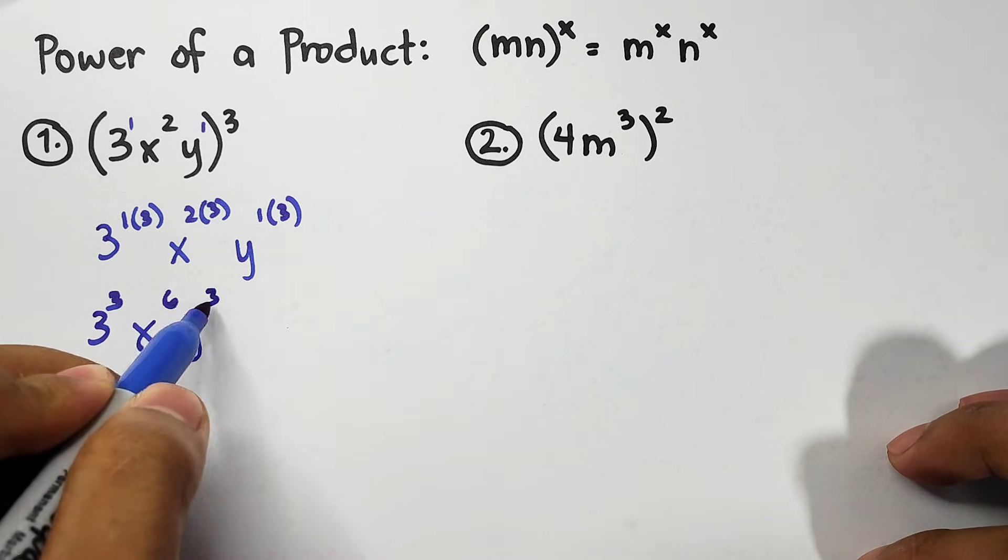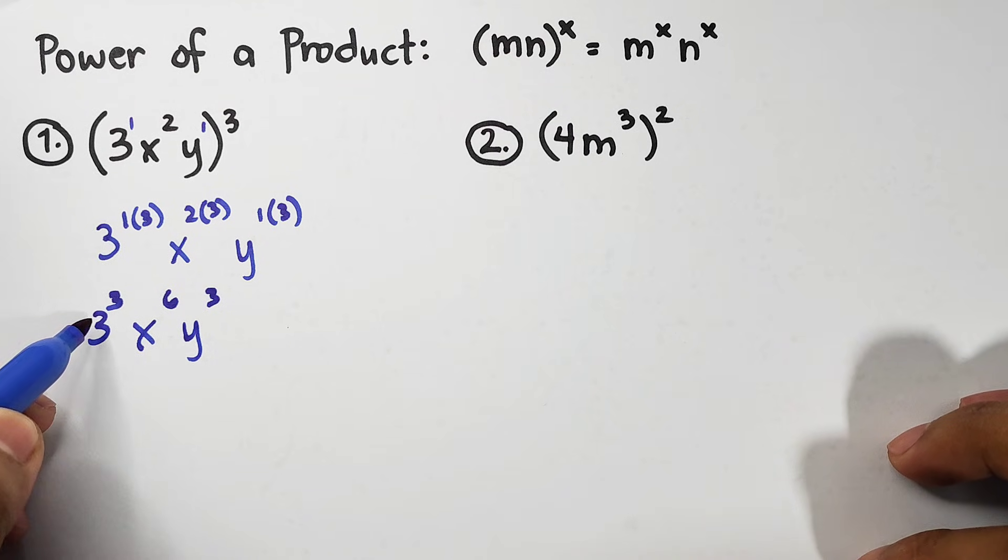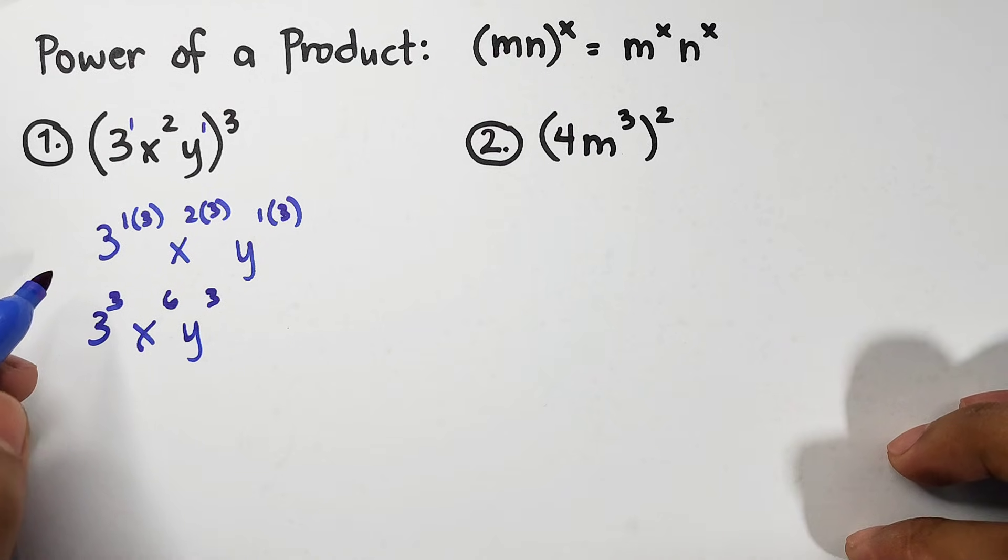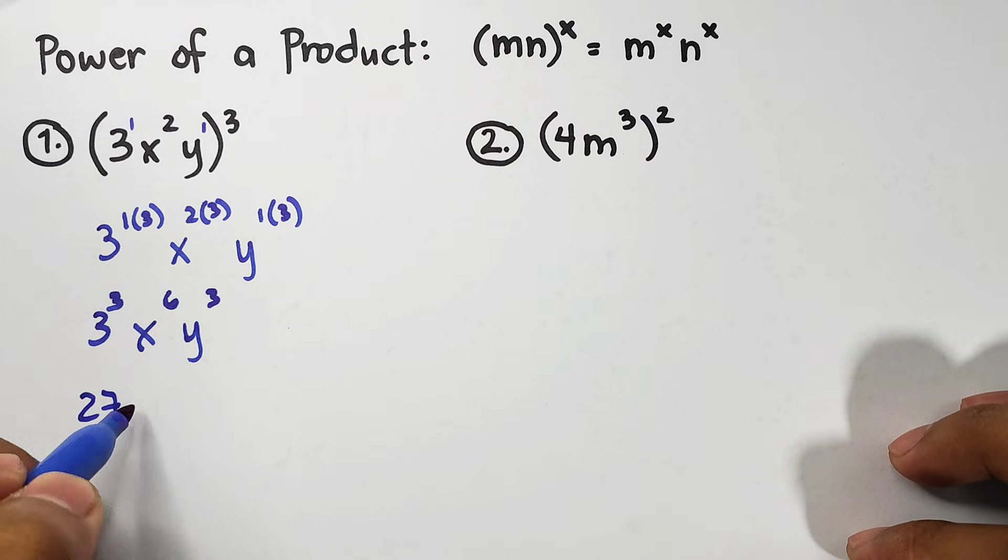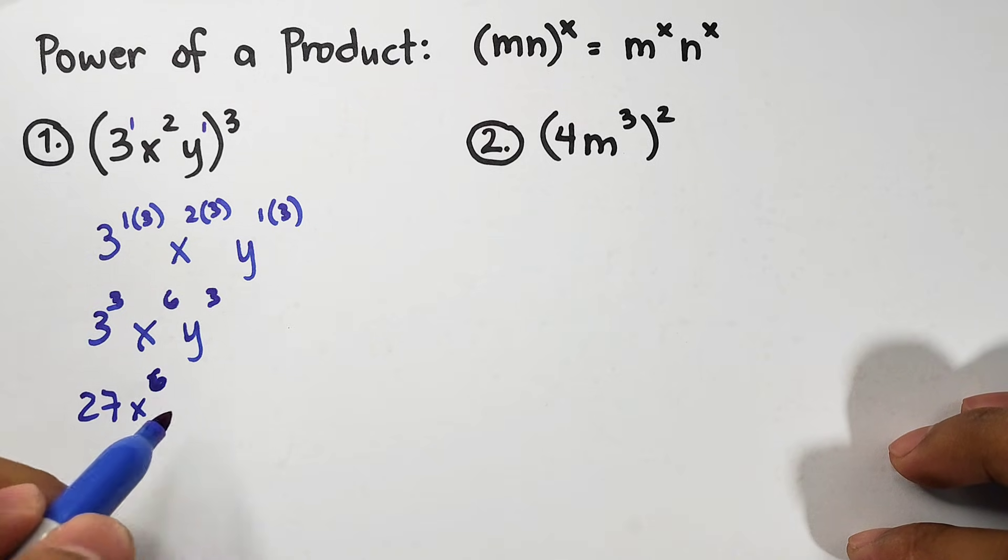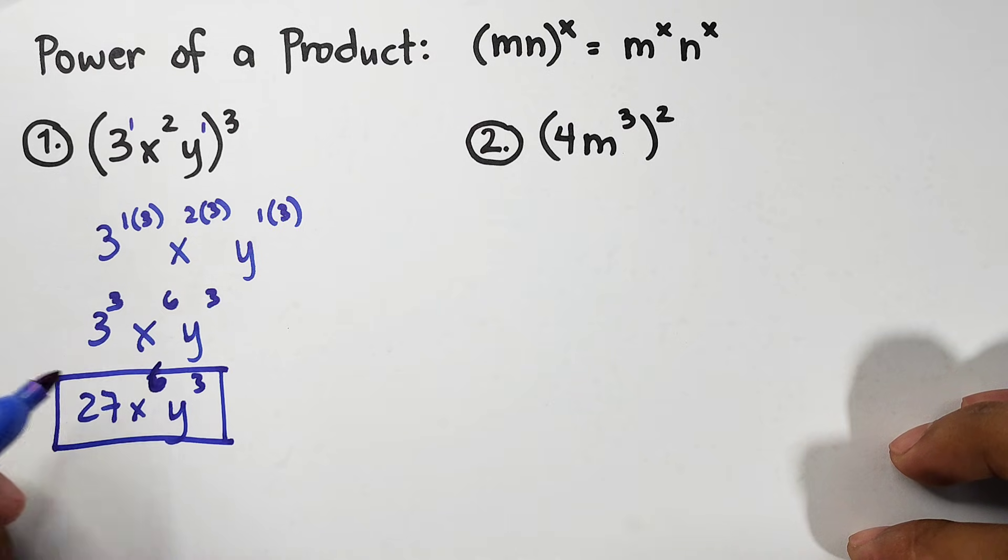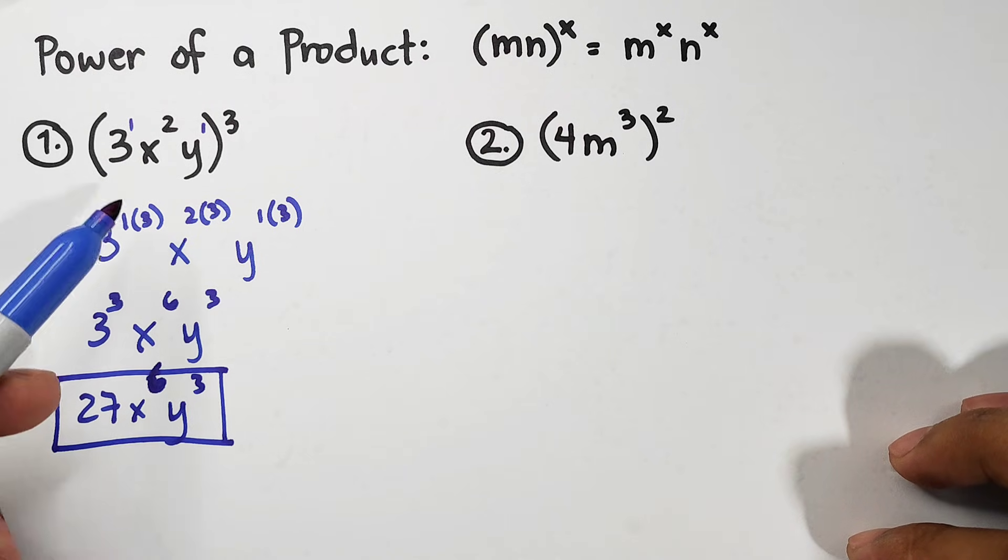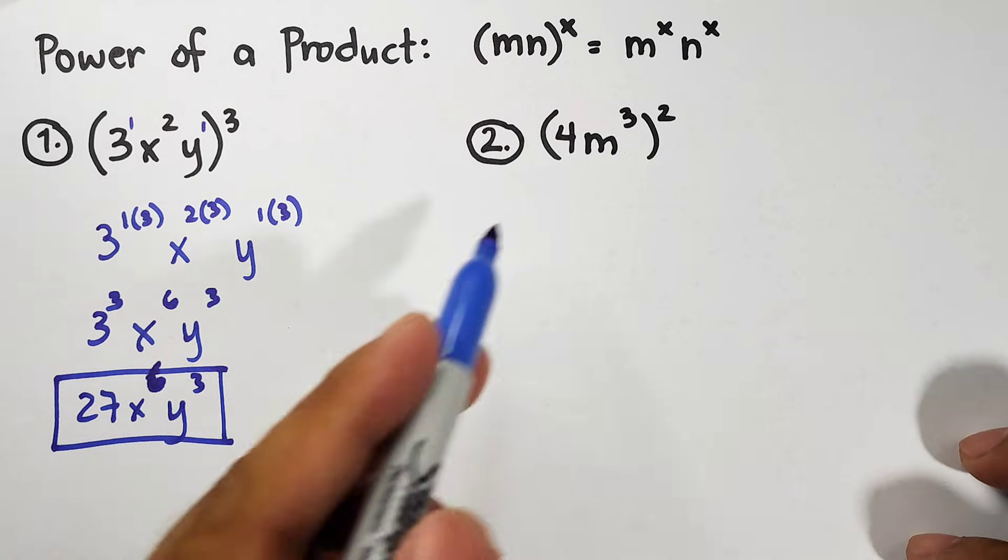And remember, 3 cubed is the same as 3 times 3 times 3. And that is equal to 27. This is x raised to 6. Y cubed. And this is now the simplified form of item number 1 for the power of a product. 27x raised to the 6th power, y raised to 3.